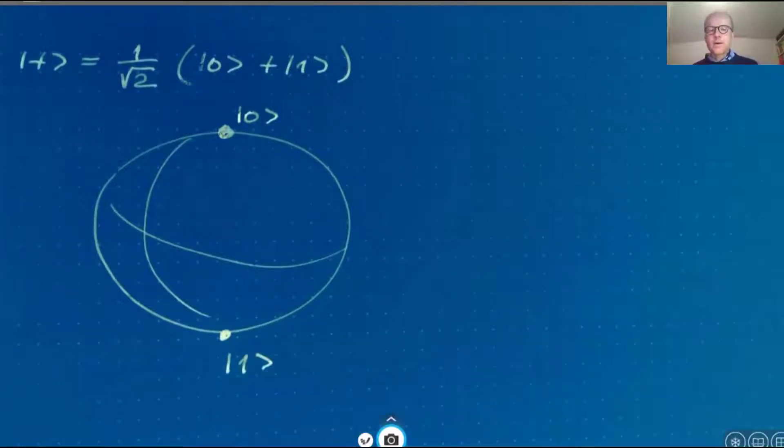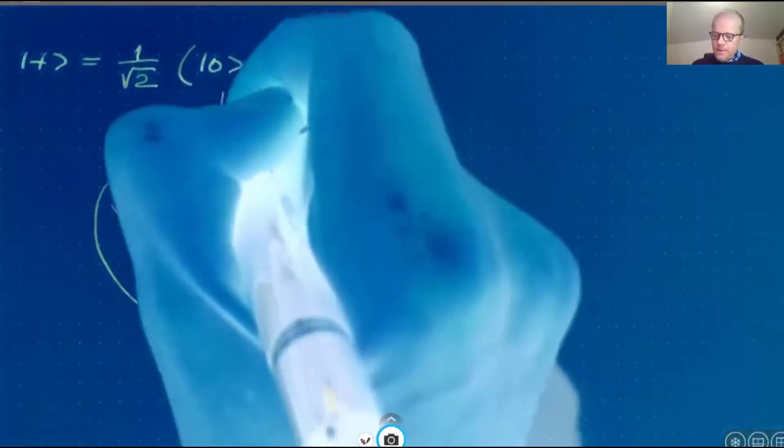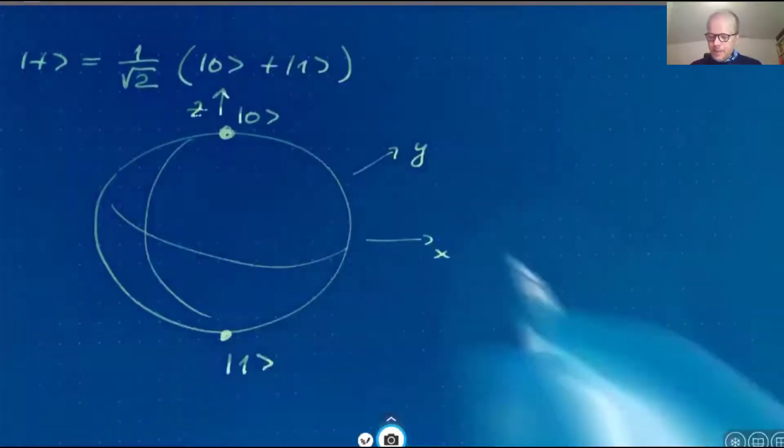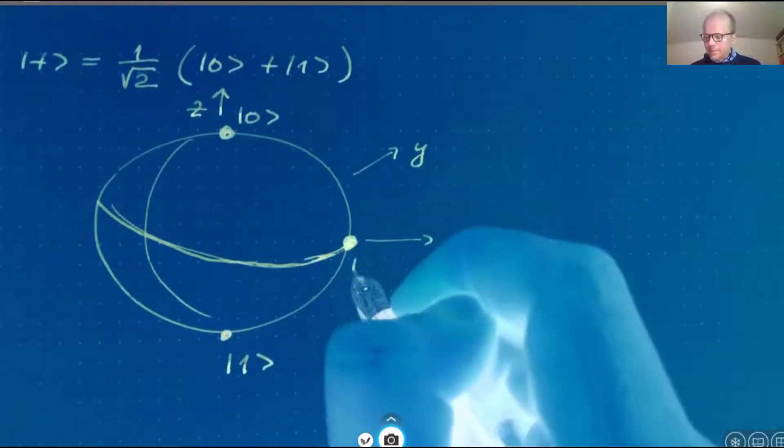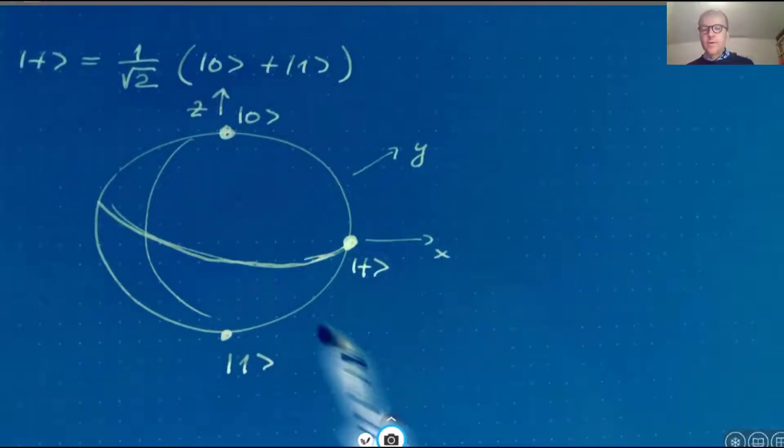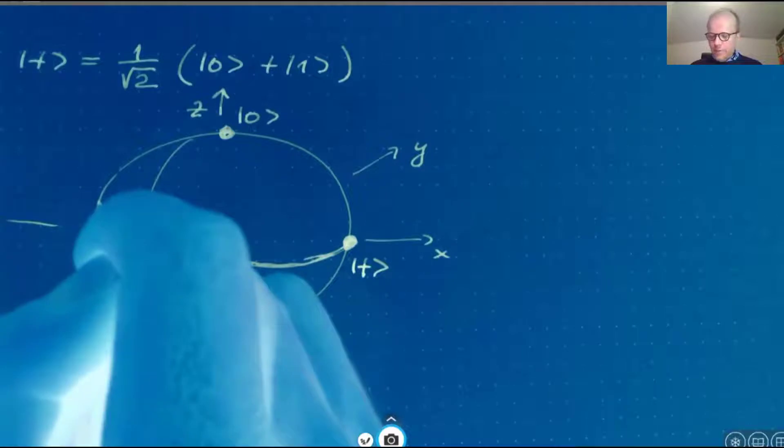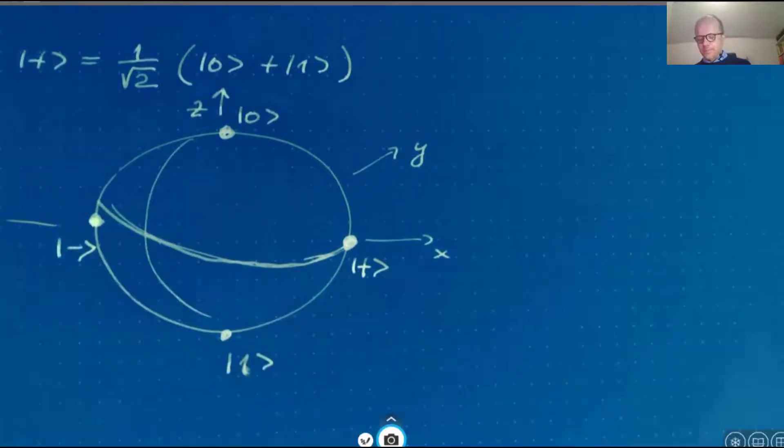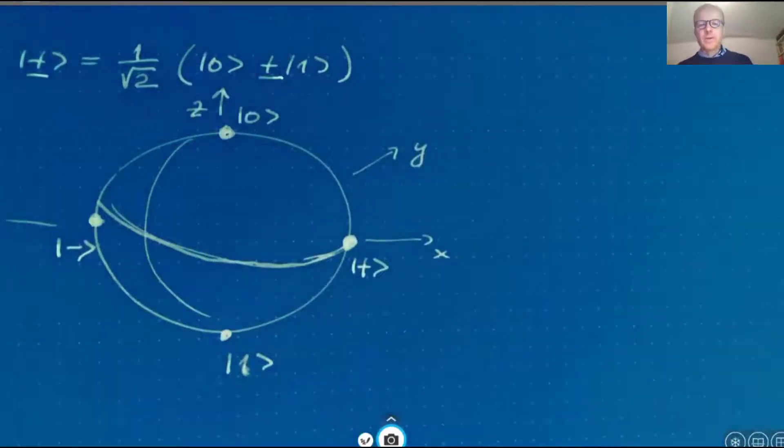And here we have the X, Y, and Z axis. Then the plus state is the state on the equator of the Bloch sphere on the X axis, and at the opposite end we have the minus state. The minus state is a superposition with a minus in between. Remember this is an alternative basis in the qubit, in the Hilbert space of one qubit.